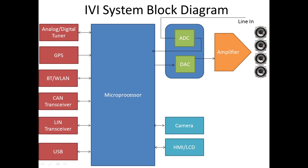For the audio section, there are two key blocks: ADC (Analog to Digital Converter) and DAC (Digital to Analog Converter). When input comes from a microphone, the analog signal is converted to a digital signal using the ADC and then fed to the microprocessor for processing. Signals coming from the microprocessor are digital in nature, so the DAC converts them back to analog, which is then sent to an audio amplifier that amplifies the signal strength.